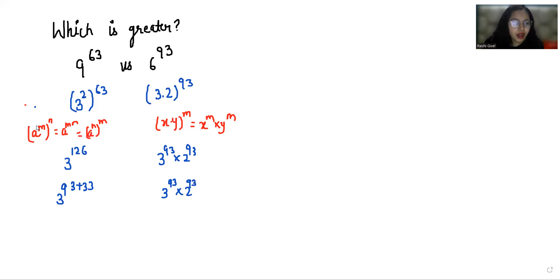Here I am going to use an identity: x power m plus n equals x power m times x power n.